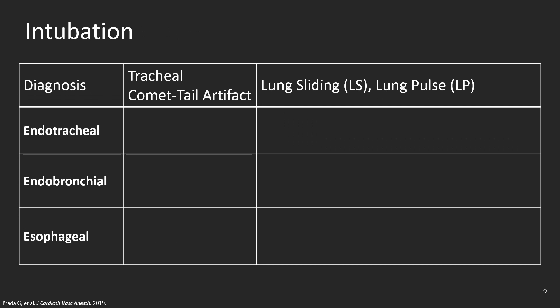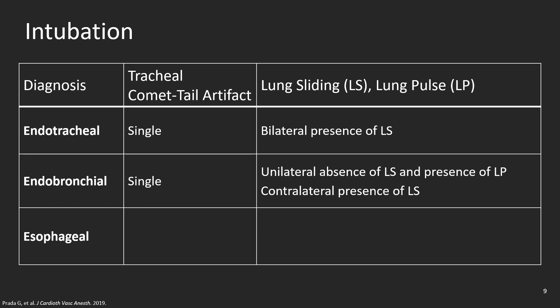Let's summarize everything on this table. Findings consistent with endotracheal intubation are: tracheal ultrasound showing a single comet tail artifact and lung ultrasound showing bilateral presence of lung sliding. With endobronchial or selective intubation: tracheal ultrasound shows a single comet tail artifact while lung ultrasound shows unilateral absence of lung sliding with contralateral presence of lung sliding. With esophageal intubation: tracheal ultrasound shows a double comet tail artifact and lung ultrasound shows bilateral absence of lung sliding with presence of lung pulse.